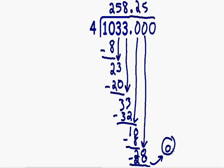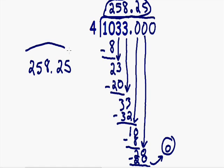Our answer is 258.25. 1,033 divided by 4 is equal to 258.25. This is our final answer. I hope you enjoyed this tutorial, and I will see you in my next video.